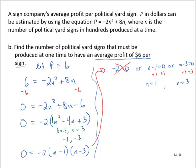So we ended up with two solutions to this equation. Now what does this tell us? To have an average profit of $6 per sign.